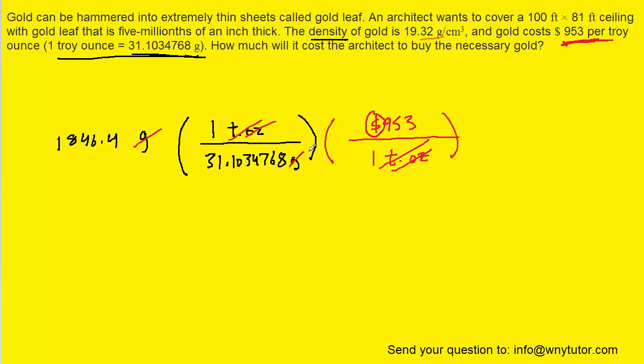Now we can finally pick up our calculators and work this all out. Make sure you enclose these quantities in parentheses when you punch them into your calculator. When you type that all in, you should get about $56,573. Very expensive ceiling. If you need to round that to any number of sig figs, you can do so. For example, if we needed to round it to one sig fig, we would note that this number would round up to just $60,000.